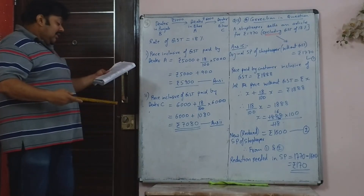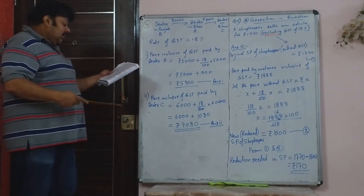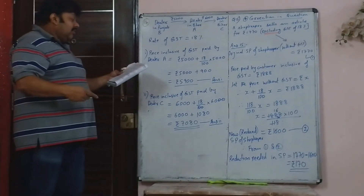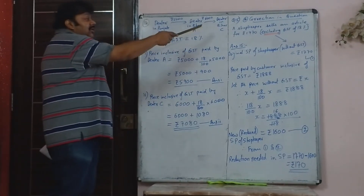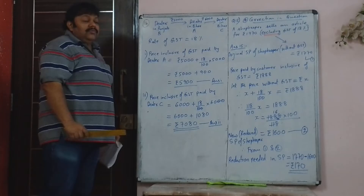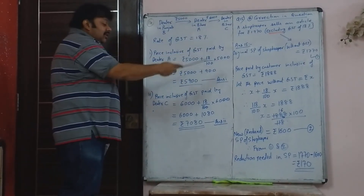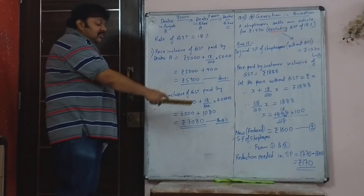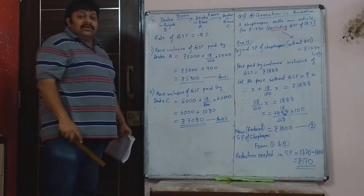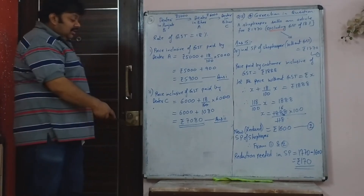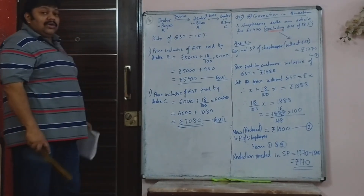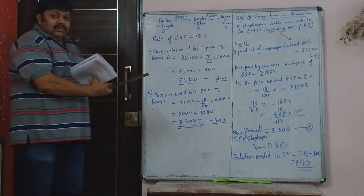Next they asked the price including GST paid by dealer C: Rs. 6,000 plus 18%, so Rs. 6,000 plus Rs. 1,080, that is Rs. 7,080. That was a very simple sum.